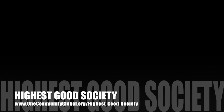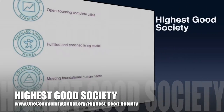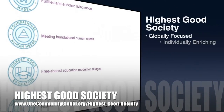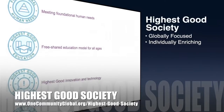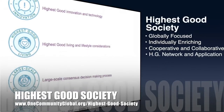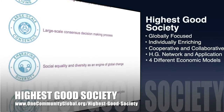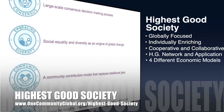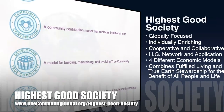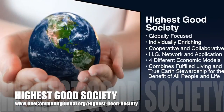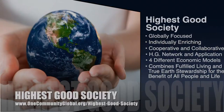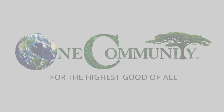The One Community approach to highest good society is globally focused, individually enriching, cooperative and collaborative, includes a highest good network and application, four different economic models, and combines fulfilled living and true earth stewardship for the benefit of all people and all life on this planet. Thank you.